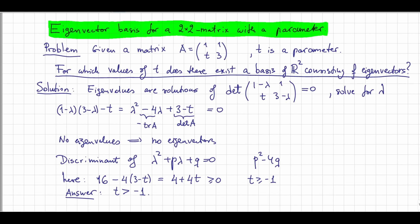And this is how we solve this problem for the existence of an eigenvector basis for a 2x2 matrix with a parameter.